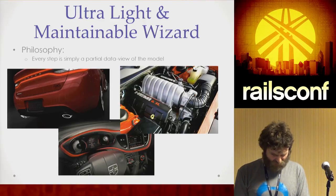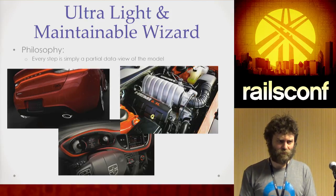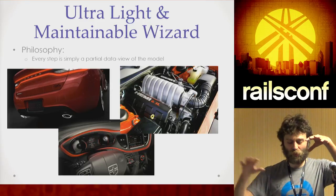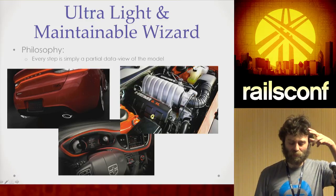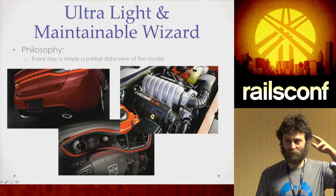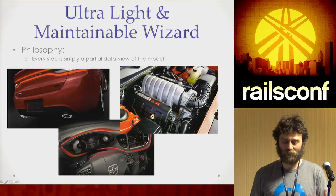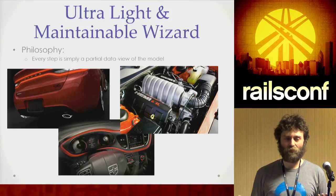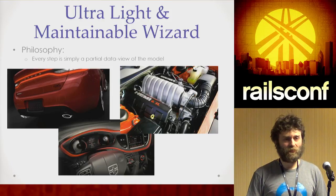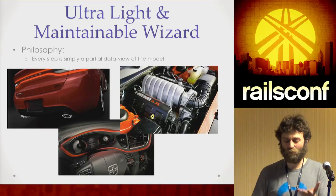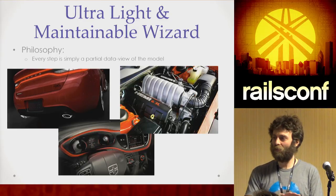Part of the philosophy I was following: each step in a wizard is nothing but a partial view of that main full object you're building. One step shows me the exterior body, another lets me customize the interior — leather or mahogany, front panel — and a third lets me customize the engine. All what steps are, are views. Instead of thinking about them as states in a state machine, this is a higher-level way: I'm viewing one part of a model.